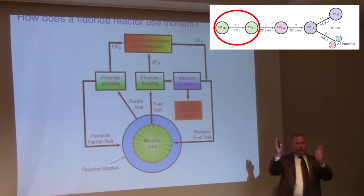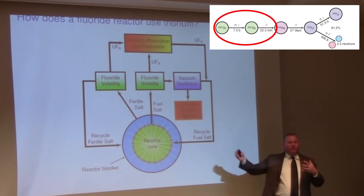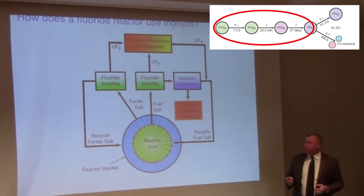It would take that first step, remember thorium-232 to 233. It's going to absorb a neutron and begin the process of becoming uranium-233.